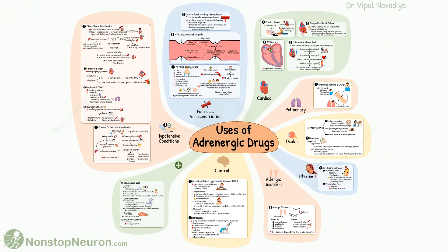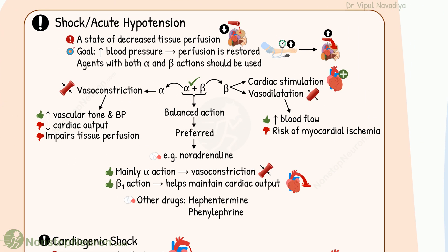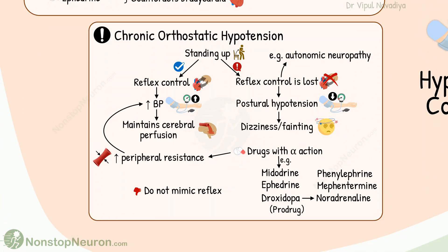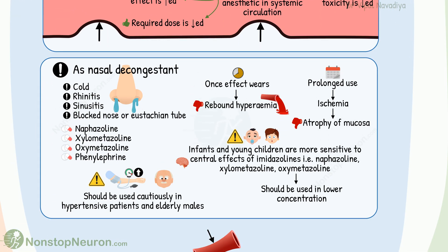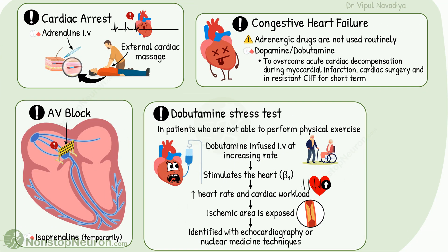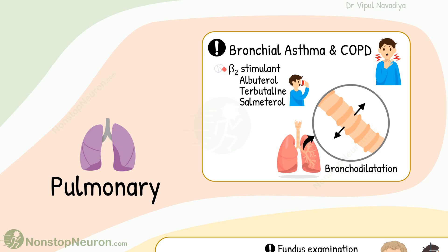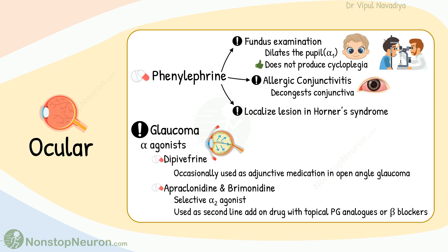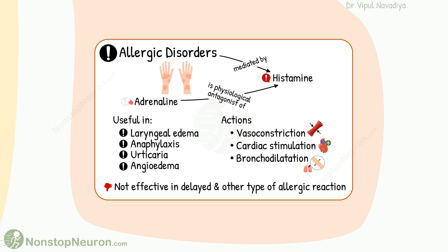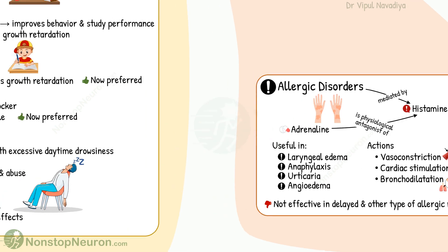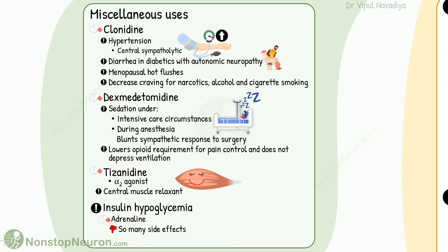So these were all the uses of adrenergic drugs. In summary, they are used in shock, chronic orthostatic hypotension, to control local bleeding from skin and mucous membranes, along with local anesthetics, as nasal decongestants, in cardiac arrest, AV block, congestive heart failure, dobutamine stress test, bronchial asthma and COPD, fundus examination, allergic conjunctivitis, Horner's syndrome, glaucoma, to postpone labor, threatened abortion, allergic disorders like laryngeal edema, anaphylaxis, urticaria and angioedema, ADHD, narcolepsy, and several additional uses.